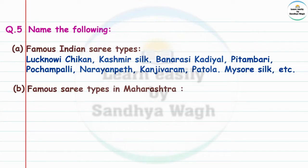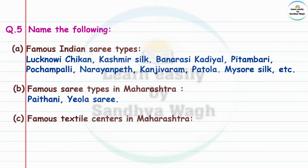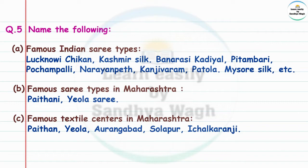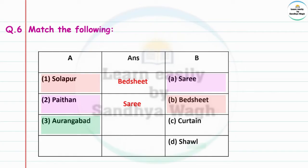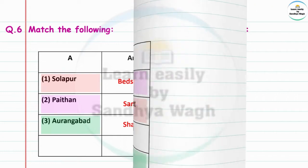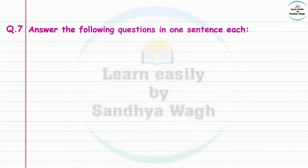Famous sari types in Maharashtra: Paithan, Yevla, Aurangabad, Solapur, Ichalkaranji. Question 6: Match the following. Solapur is famous for bed sheets. Paithan is famous for Paithan sari. Aurangabad is famous for shawls.